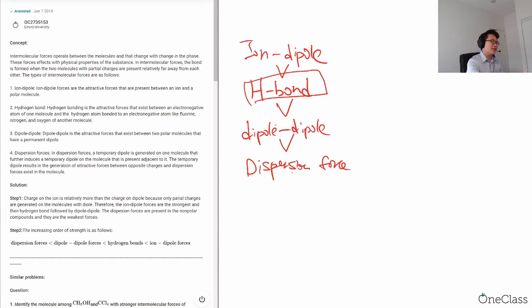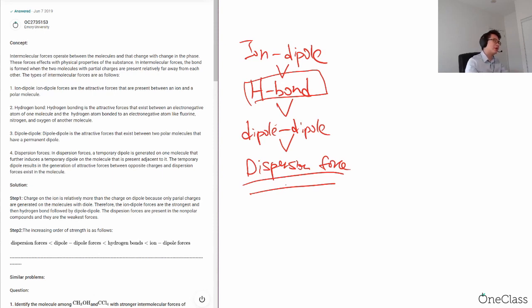And of course, dipole-dipole interaction will be stronger than the dispersion force. Because for dispersion force, it all depends on chance. So it doesn't always happen. So when it happens, the interaction is not that strong. So that's why it's always weaker.